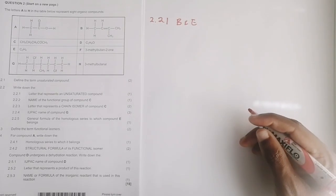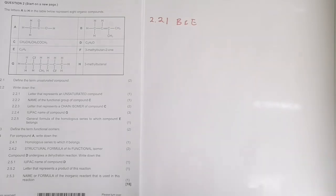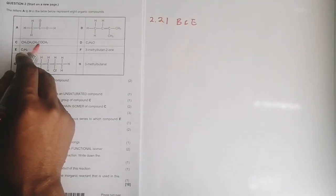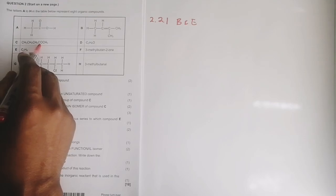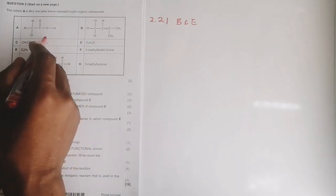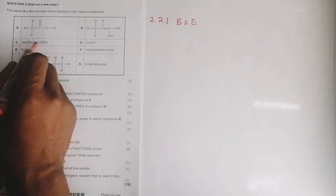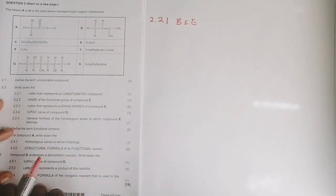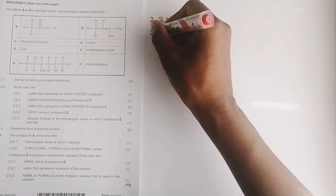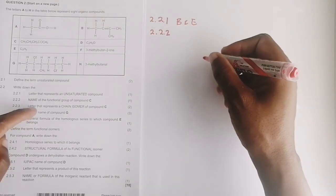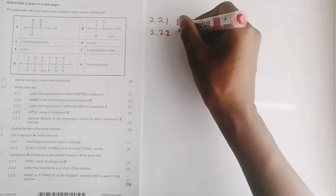The next question says: name the functional group of compound C. Looking at compound C, it has an oxygen with a C double bond O (carbonyl). Since that carbon doesn't have a hydrogen attached, it can only be a C=O, which makes it a ketone. The functional group of ketones is the carbonyl group.